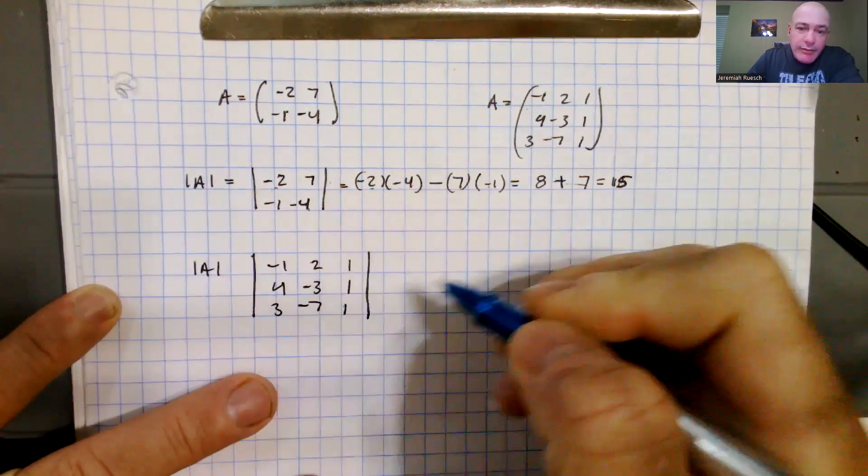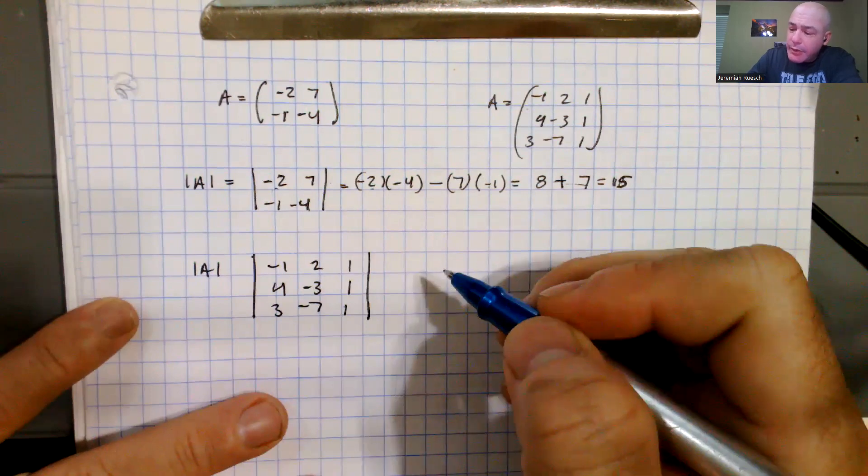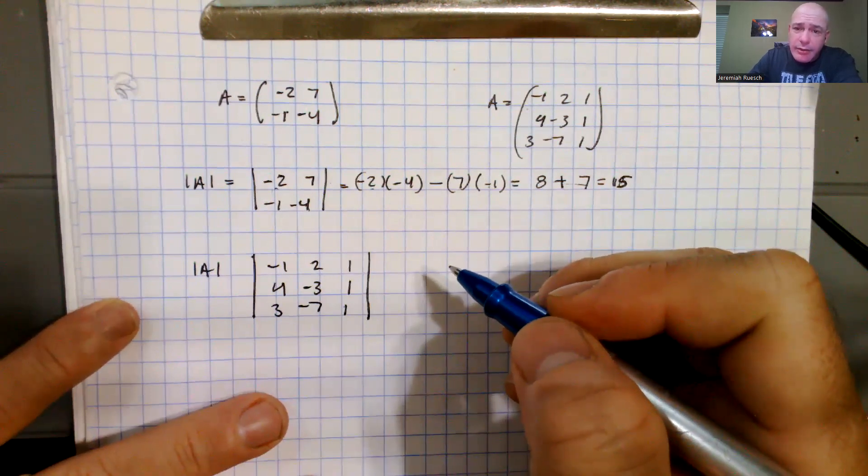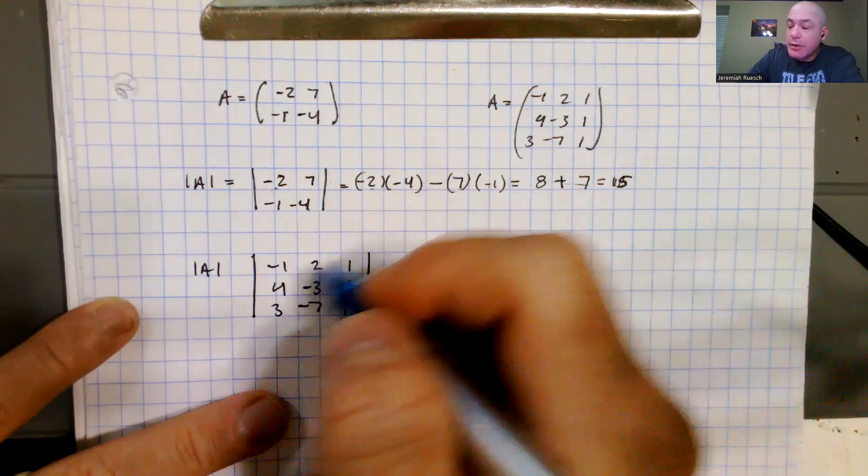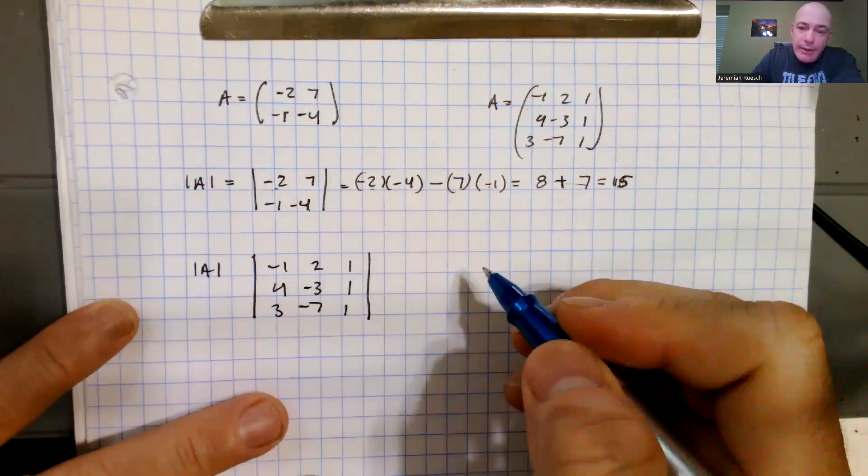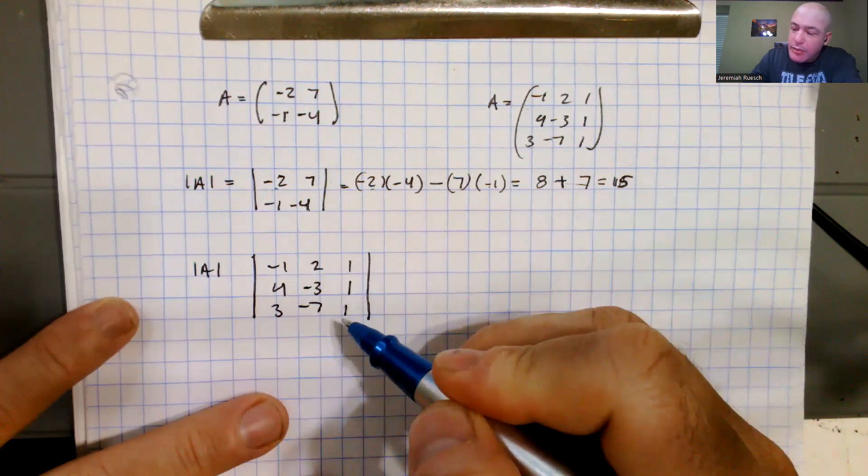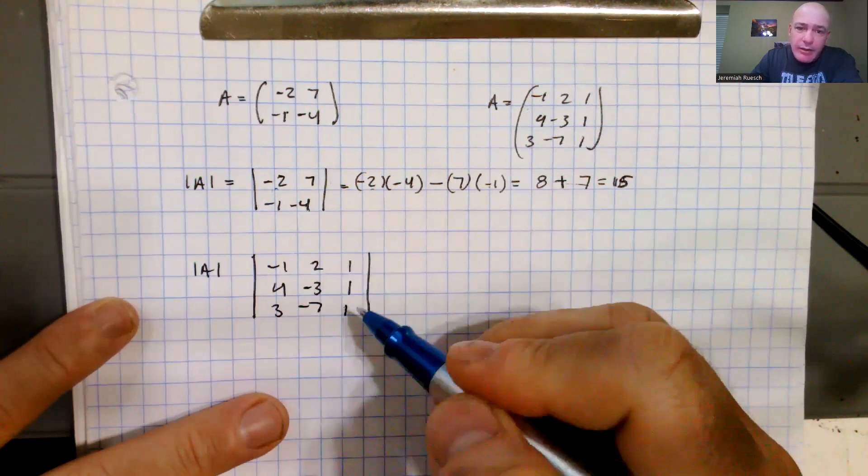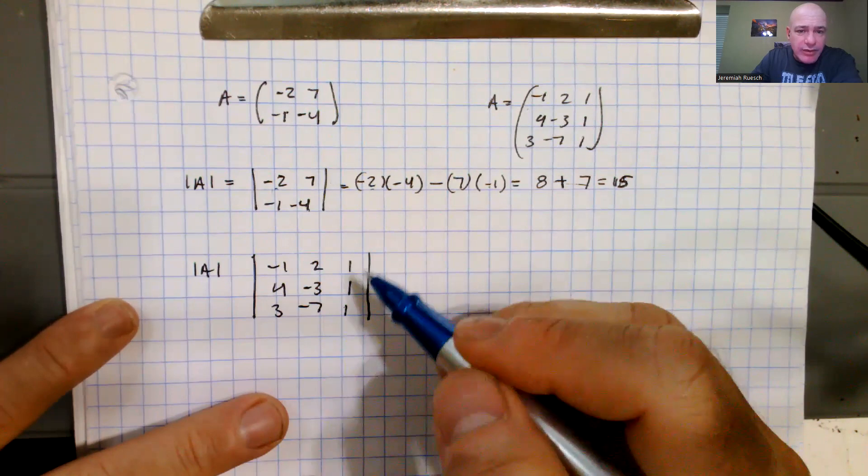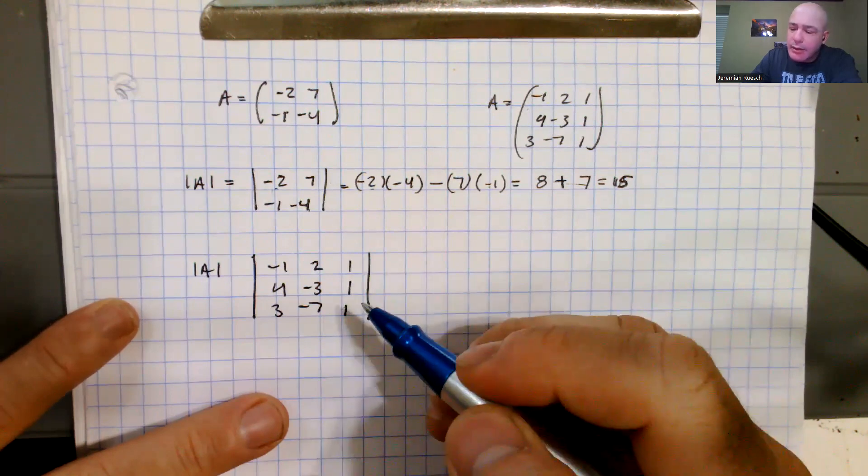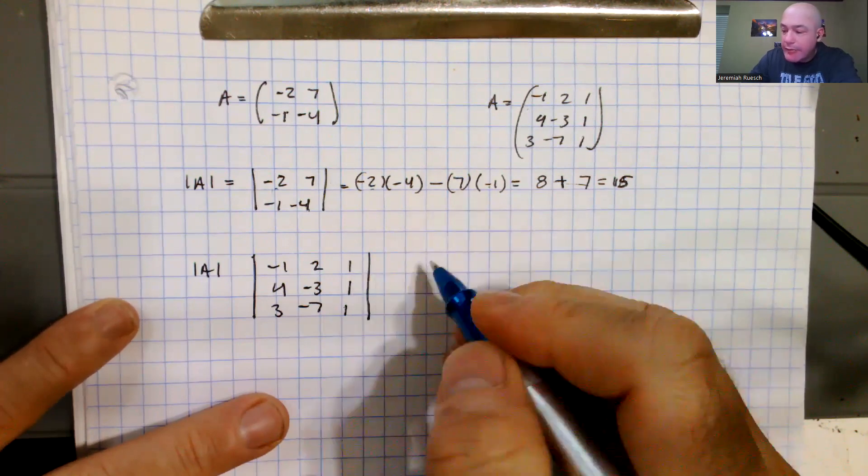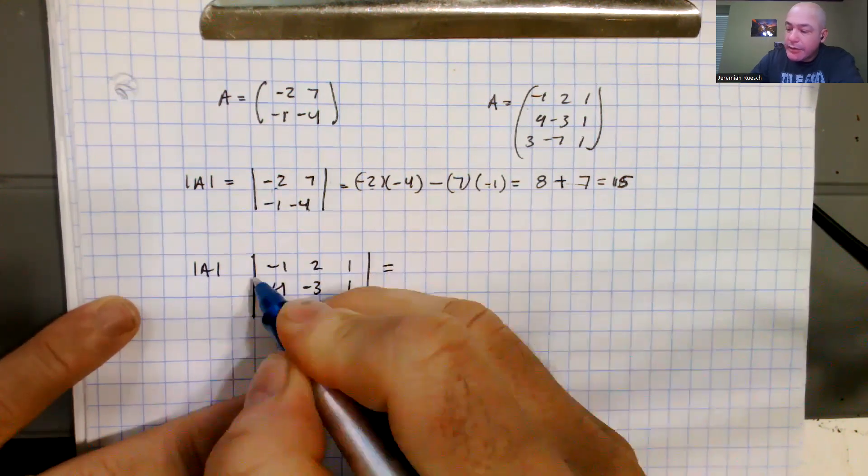So this is going to feel very familiar to when we calculated the cross product. So the cross product is actually a determinant, and we're going to go along with the top row, row 1, that's a very common approach to this. But for now, we're just going to go along the top row.